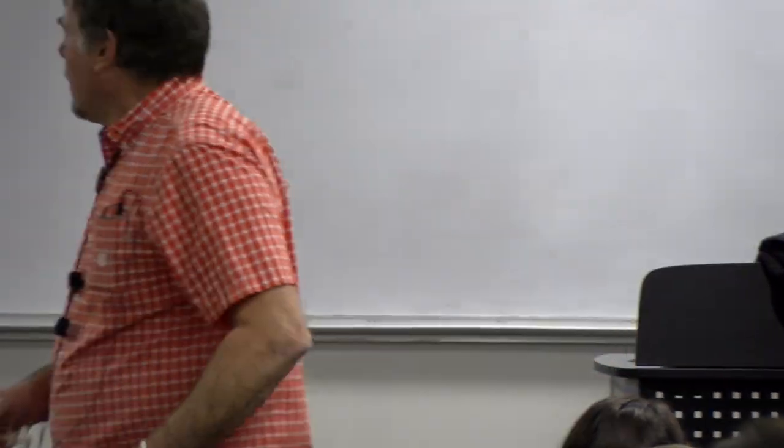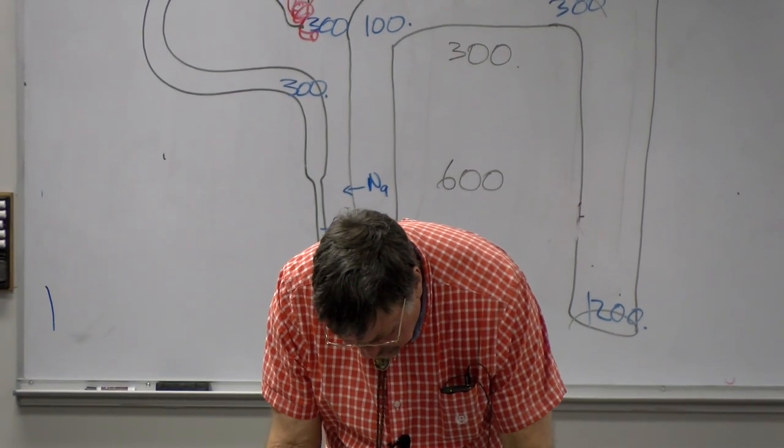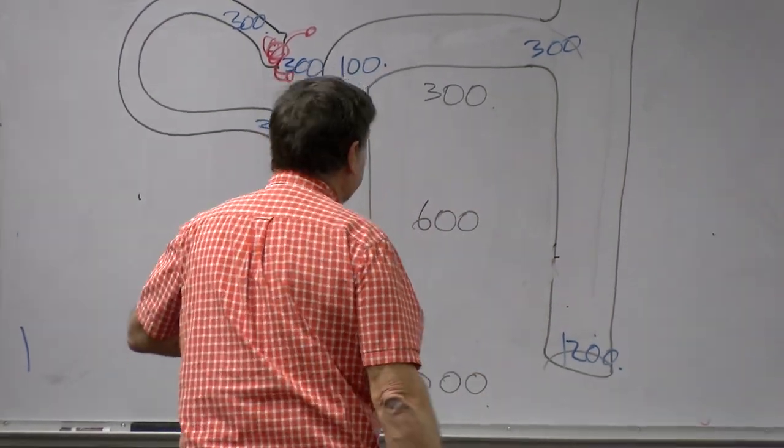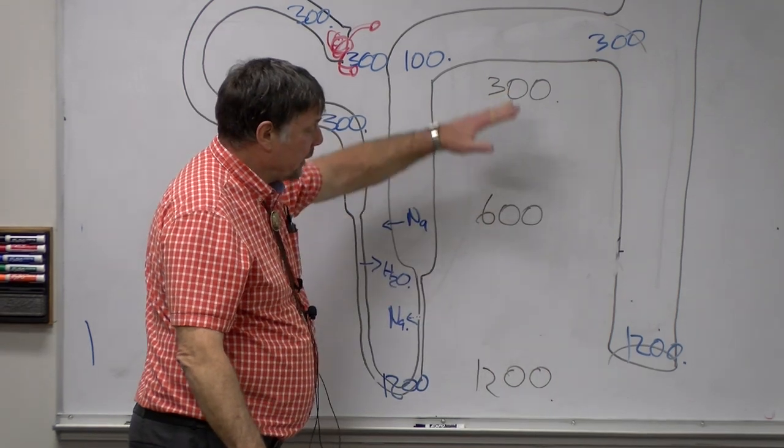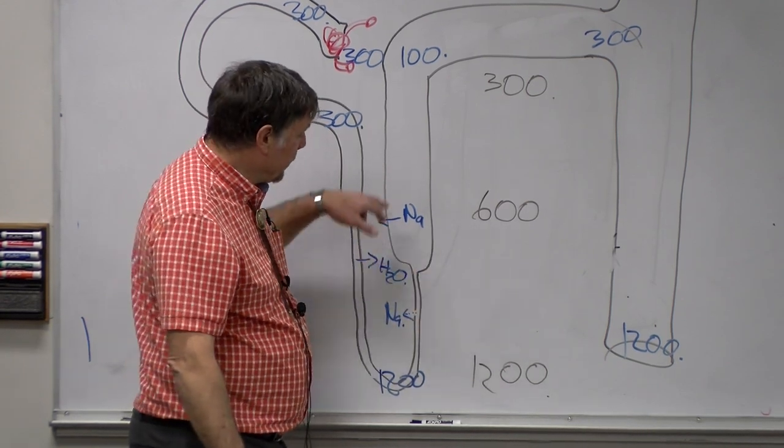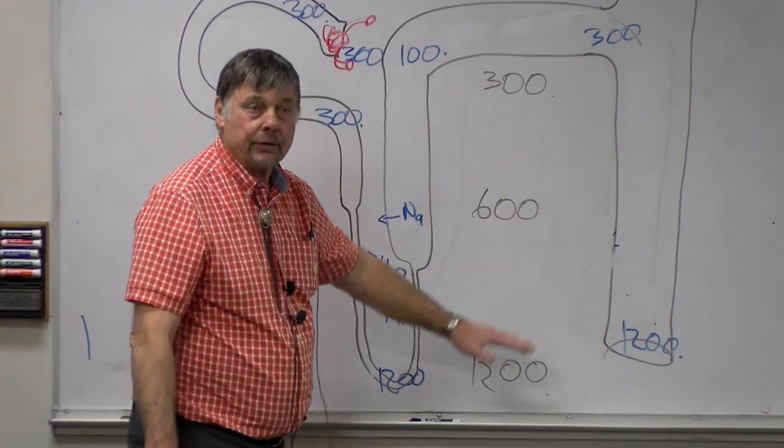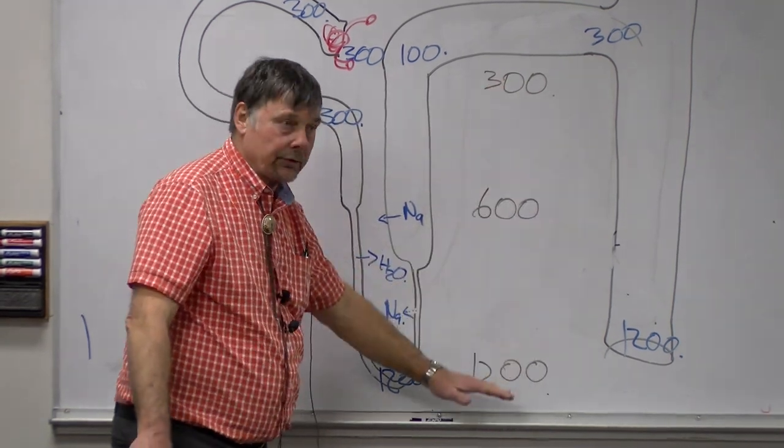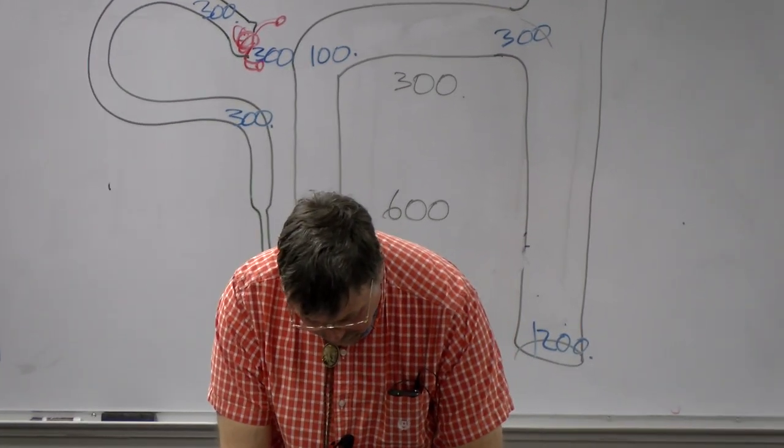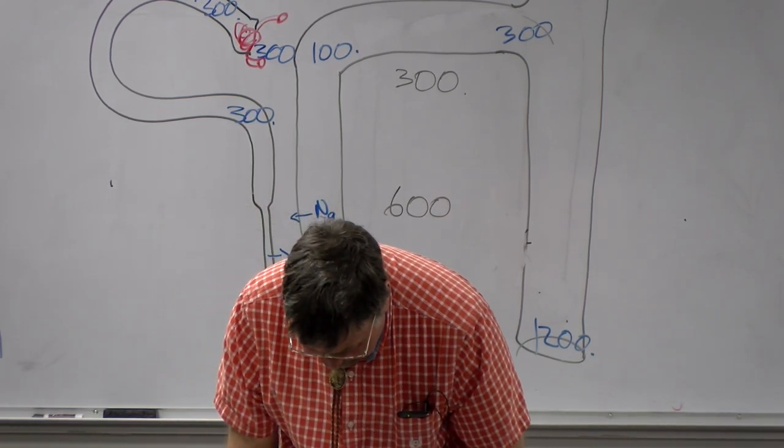Before we go to urea, we do trap sodium and chloride, and probably other substances too, like anything that's reabsorbed in the loop of Henle, ammonium, maybe potassium, a whole bunch of things, calcium. There may be an increased concentration of those ions too. So, let's move over to urea, and see how we can actually make urea contribute to that gradient.